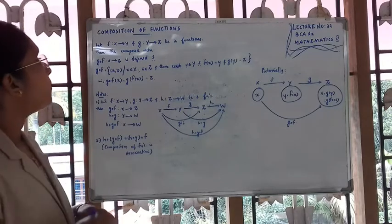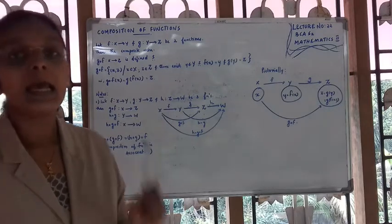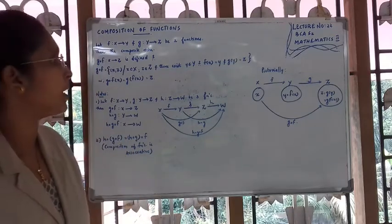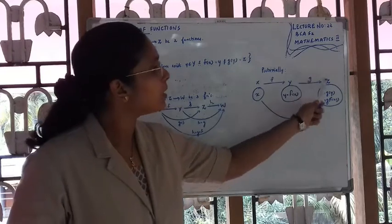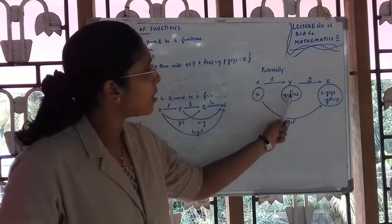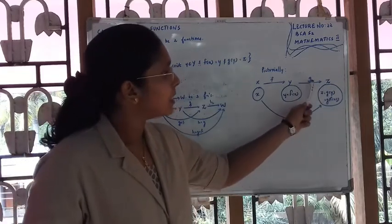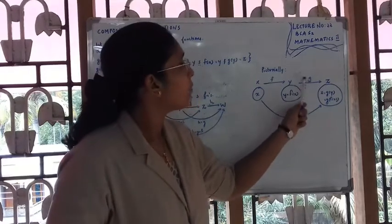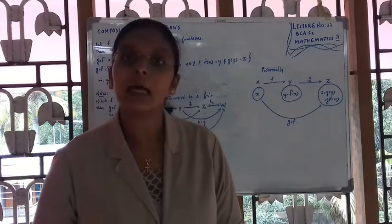Let's have a look at this. Let f from X to Y and g from Y to Z be functions. So Y is equal to f of X and Z is equal to g of Y.